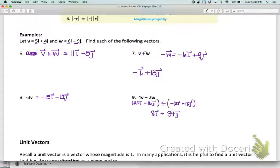This is what you should get. First you multiply by 4 for v and you get 20i + 16j. Then I went ahead and multiplied w by -2 so that I could just add. You should end up with 8i + 34j. Those are some operations we can do with vectors in the coordinate plane.